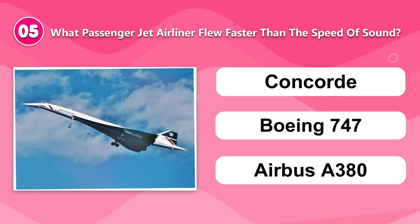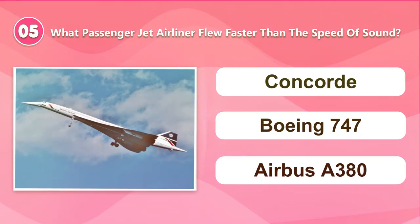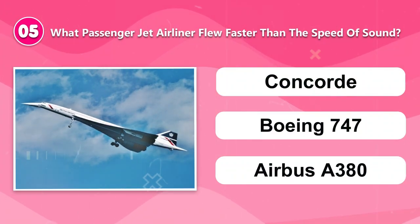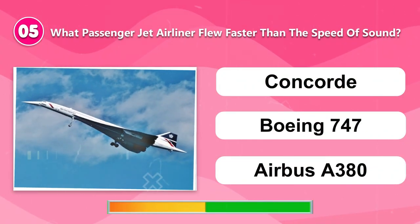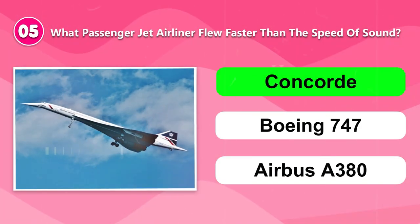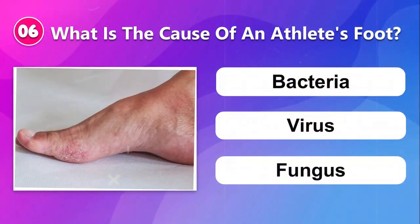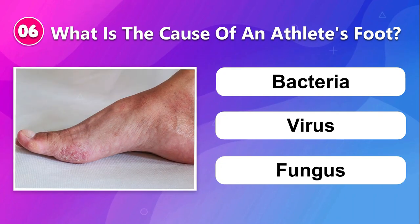Number five: What passenger jet airliner flew faster than the speed of sound? Concorde, Boeing 747, or Airbus A380. Number six: What is the cause of athlete's foot? Bacteria, virus, or fungus.